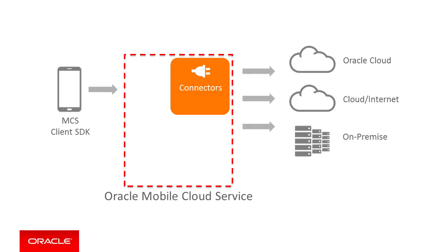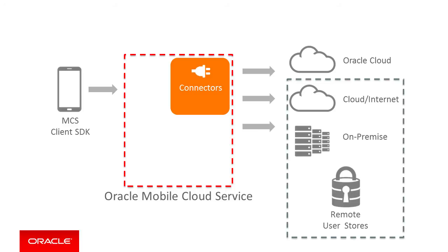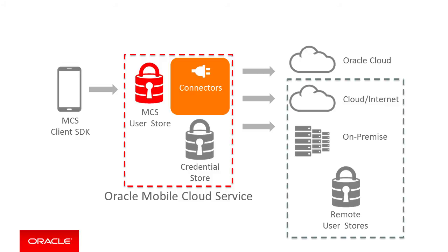Another huge advantage of connector APIs is that they enable you to authenticate against systems that do not rely on the MCS or Oracle Cloud user stores. In other words, users authenticate against MCS and MCS will authenticate on their behalf on other systems. The required credentials are securely stored in MCS and you do not need to manipulate them in your code, which would be a huge security vulnerability. Behind the scenes, they are managed through the WebLogic Credential Store framework, a very mature API used for a long time in production applications. The consequence is that you can be sure everything is properly protected and encrypted.